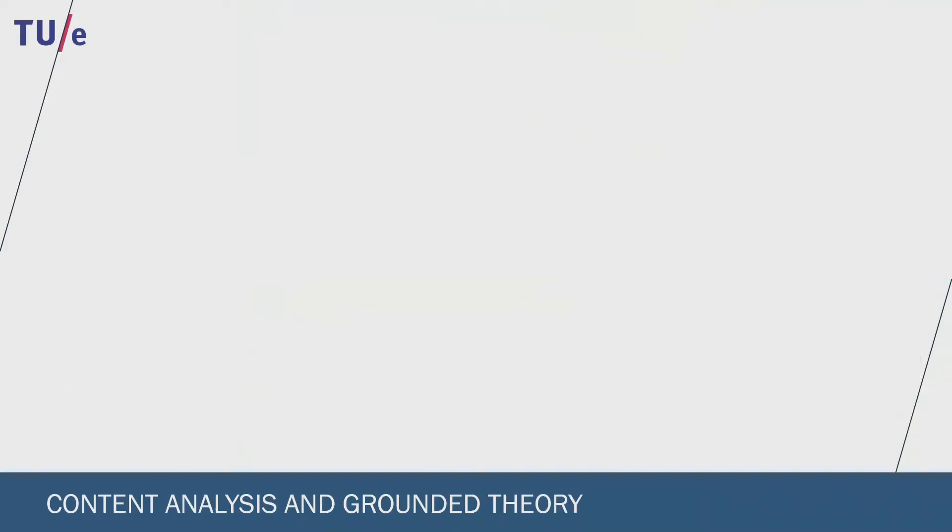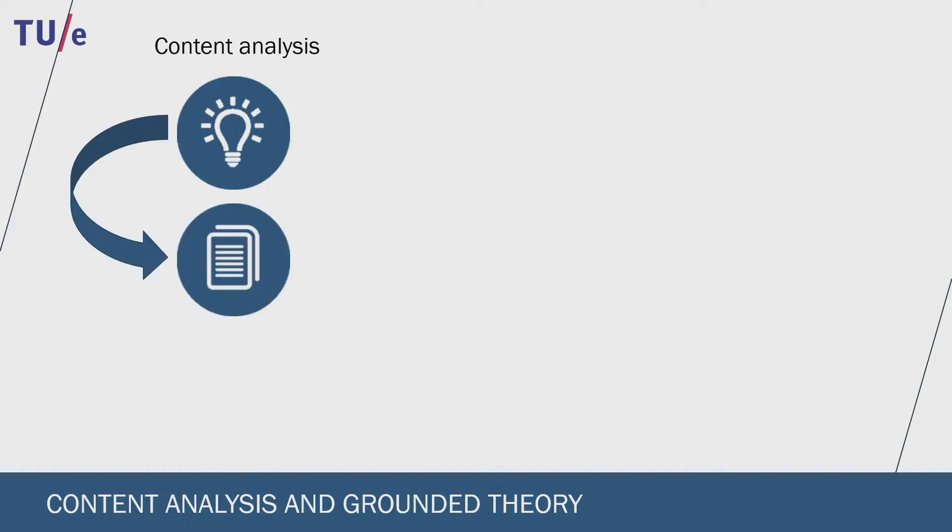First content analysis. This analysis starts with a theory or an idea. With this idea in mind we collect some data and test whether this data supports your theory. It could either give support or not. After this we can draw our conclusions and write them down in a report.